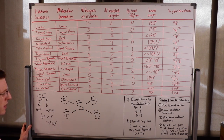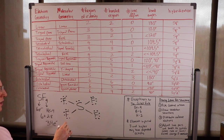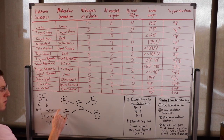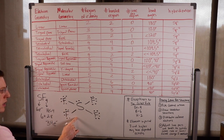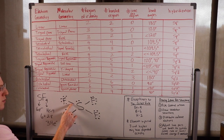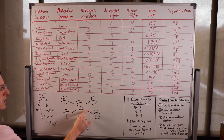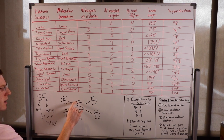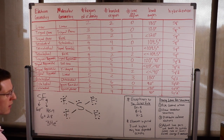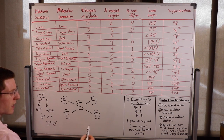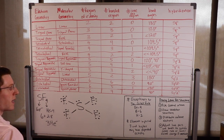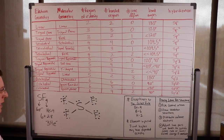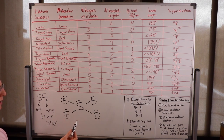Now everything should have a satisfied octet. The fluorines are all good. But the sulfur has 10 electrons — it has too many. However, elements in period 3 and higher may have expanded octets. Sulfur is one of those examples, so don't worry — it's an exception.